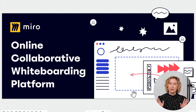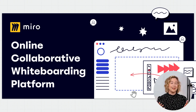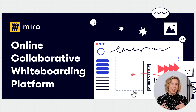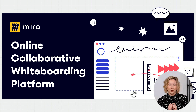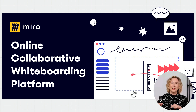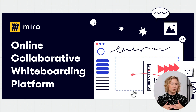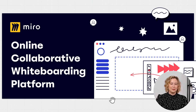Before we begin, let's cover some basics about what Miro is. It's an online collaborative whiteboarding platform. It's online in that you can access it from any device — your desktop, laptop, smartphone, or tablet — and download the app or open it in any browser. It's collaborative, so you can co-create content with others at the same time. It's a whiteboarding tool and also a platform that integrates with many tools you're likely already using. Check out our marketplace for integrations.